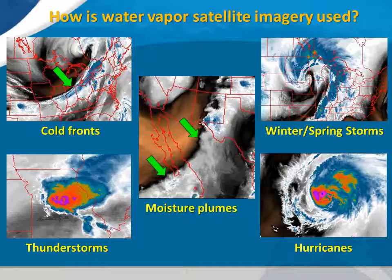Water vapor imagery can help us see powerful winter and spring storms, such as the one in the top right image. Water vapor imagery also helps us see areas of thunderstorms, as in the bottom left image.